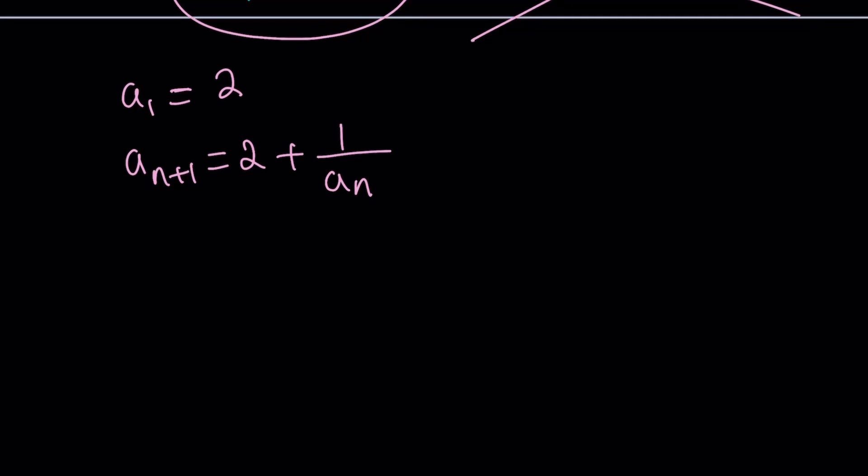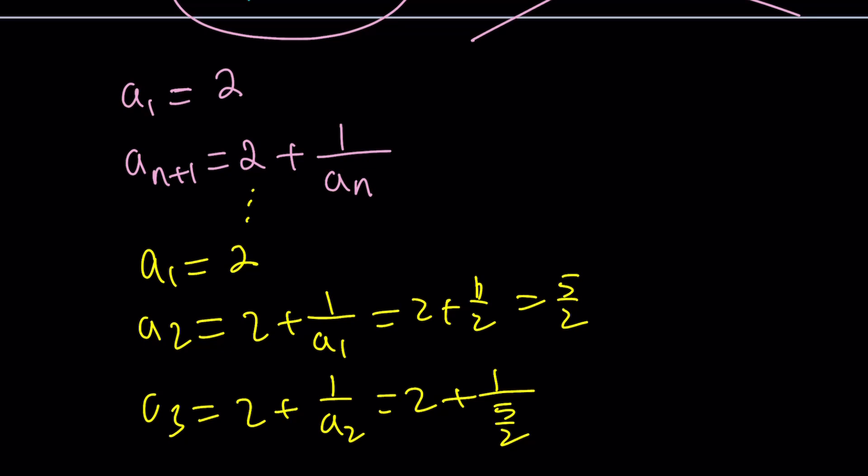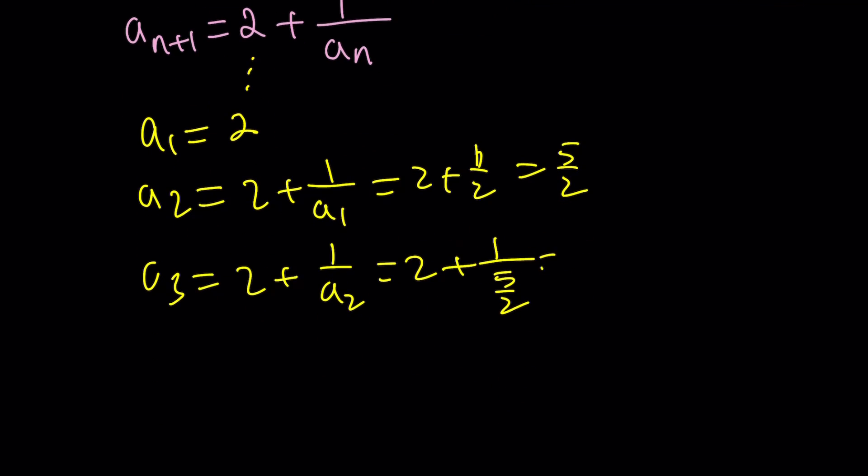So a sub 1 is equal to 2. Yes. A sub 2 is going to be 2 plus 1 over a sub 1, which is 2 plus 1 half. And that's going to be 5 halves. Great. A sub 3 is going to be 2 plus 1 over a sub 2. But that's just 5 halves. That becomes 2 fifths. And you add them. They're going to be 12 over 5.